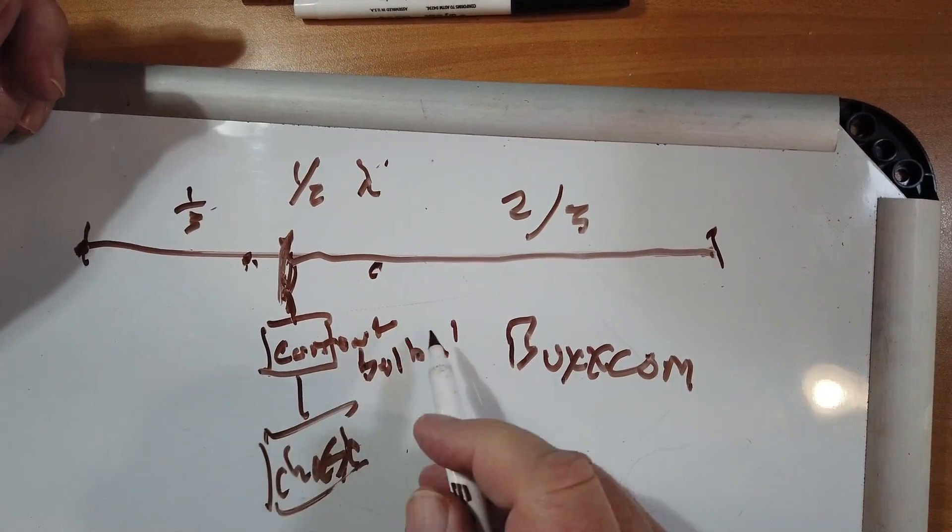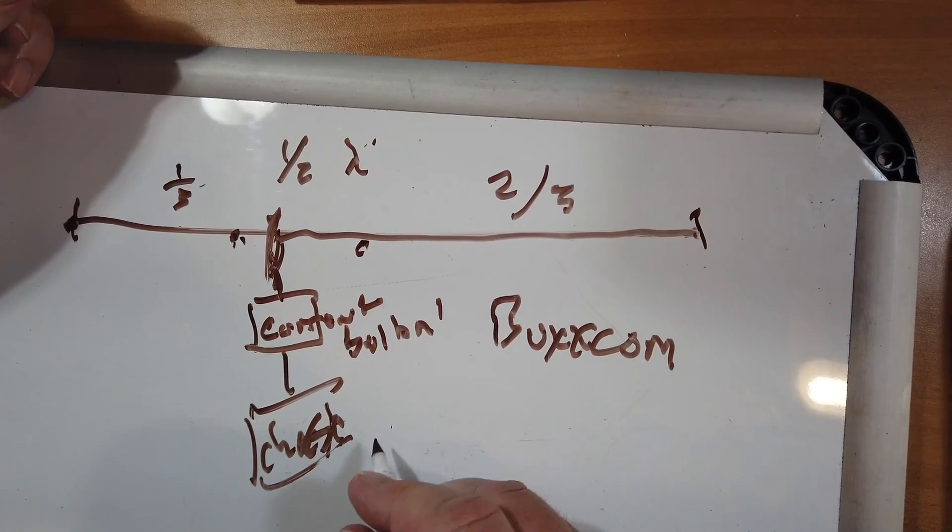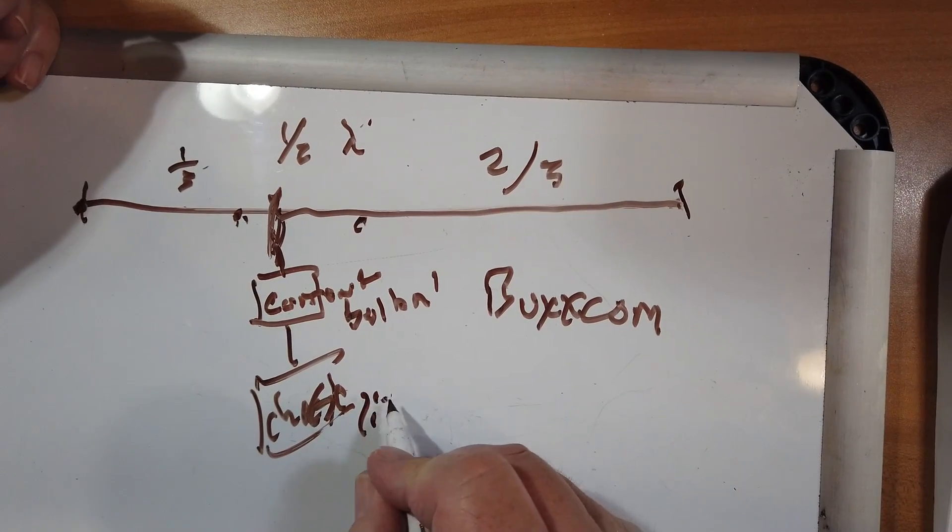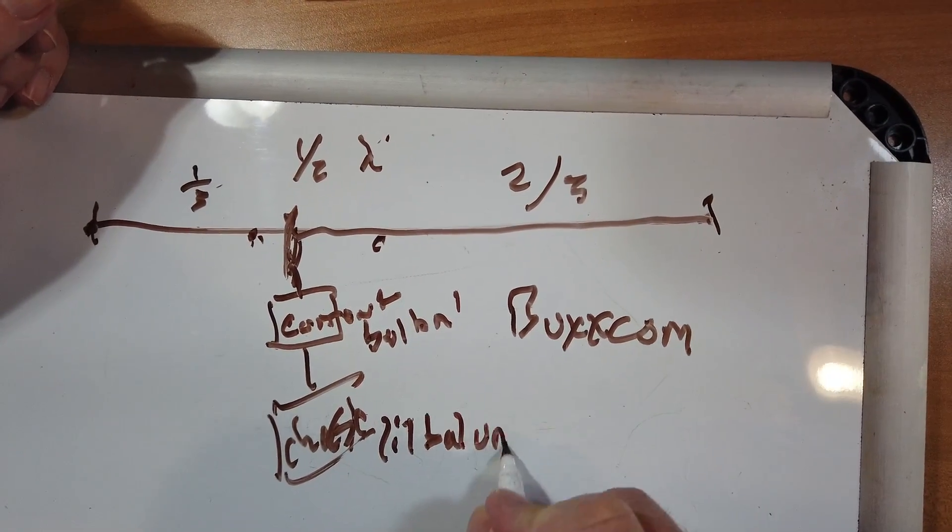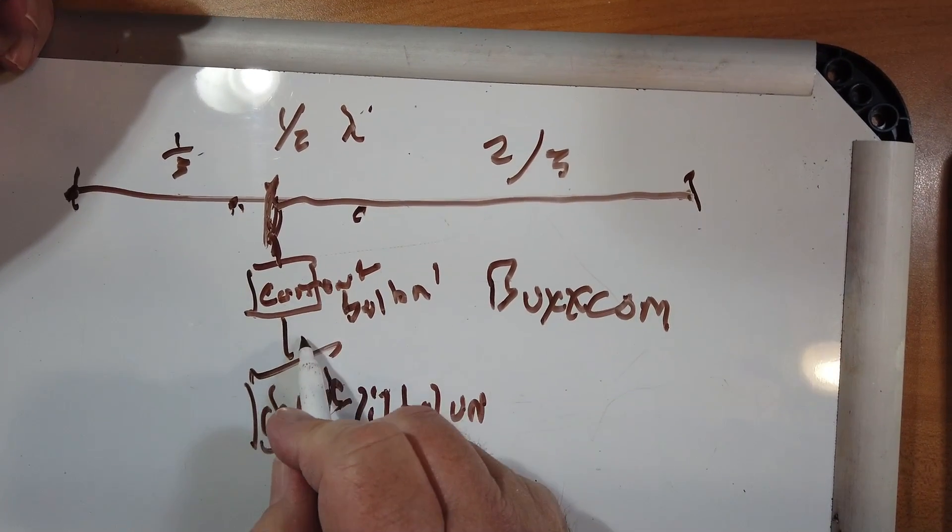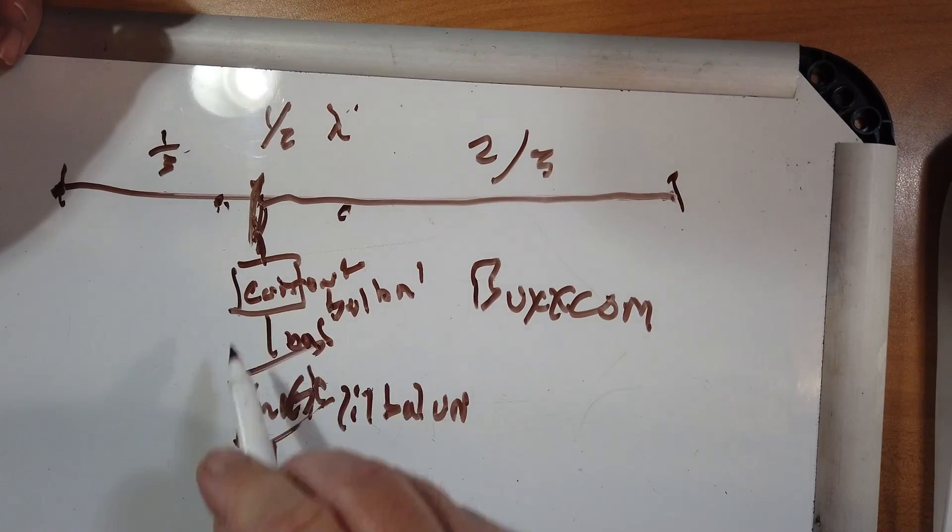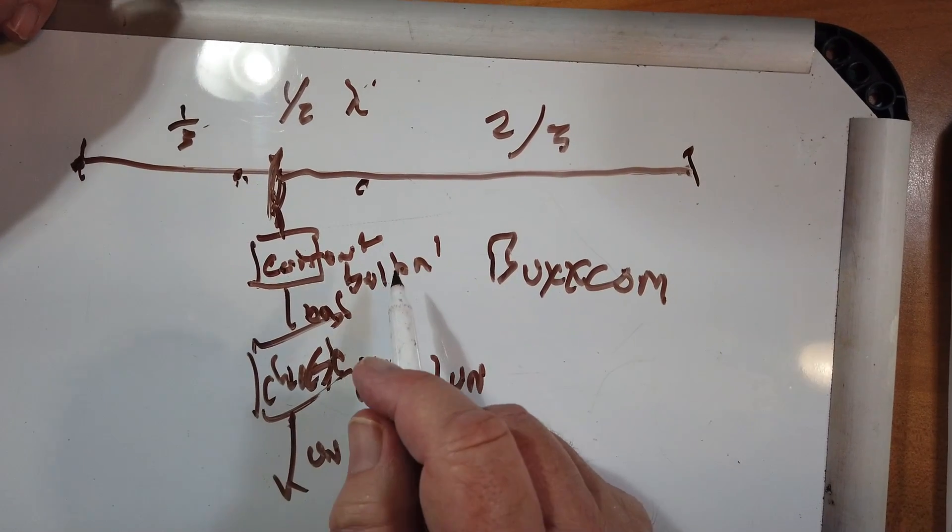It's balanced to balanced. And the choke balun creates the equivalent of a one-to-one bal-un, with the un part coming out here, and the balanced coming out here. And these are on the same board. I mean, they're within a few millimeters of each other.